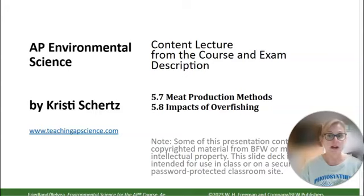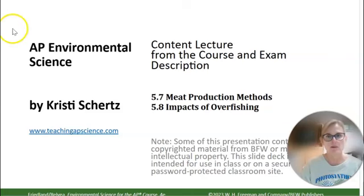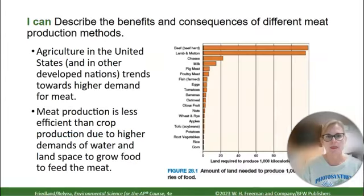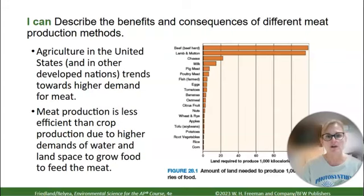Moving on to topics 5.7 and 5.8 in AP Environmental Science: meat production and overfishing. Agriculture in the U.S. and in other developed nations — our richer nations — has transferred higher demands for meat.